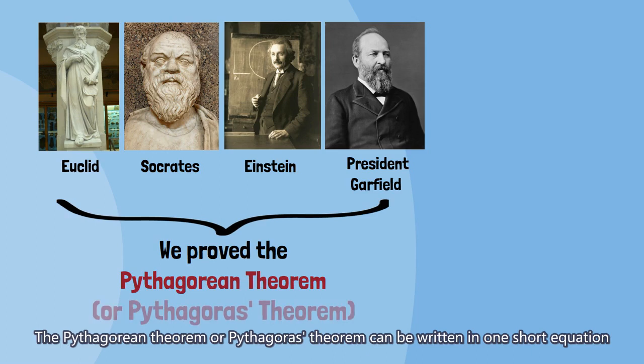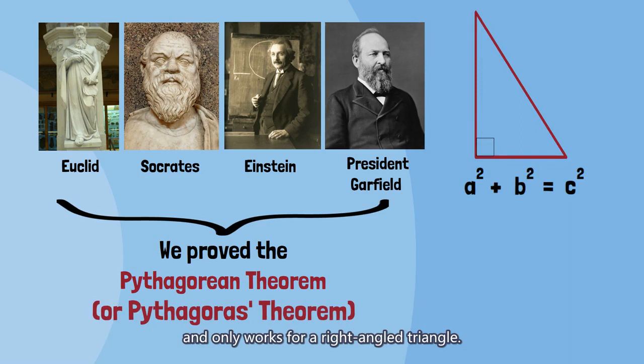The Pythagorean theorem or Pythagoras's theorem can be written in one short equation and only works for a right-angled triangle. To date, there are at least 367 ways to prove this popular theorem.